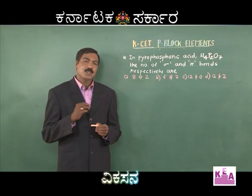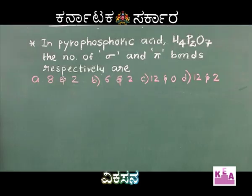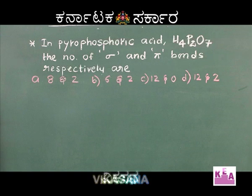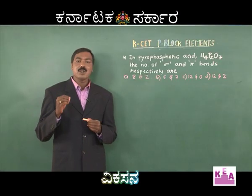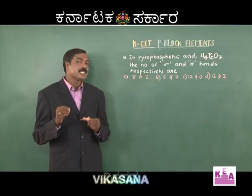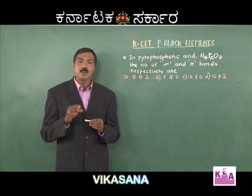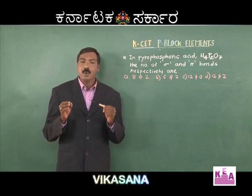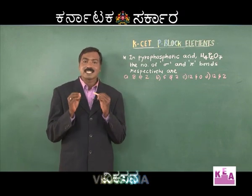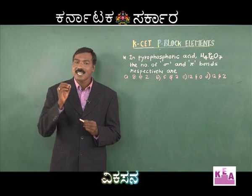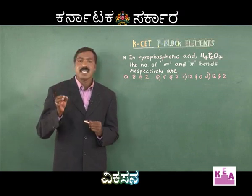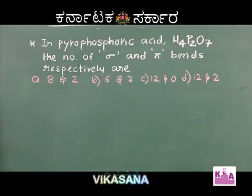In this question, we have pyrophosphoric acid — you are given the formula H₄P₂O₇ — and we need to find the number of sigma and pi bonds present in the structure. So how do I work this? When I write the structure, I remember the codeword: P double bond O umbrella. Let me devise that formula once again.